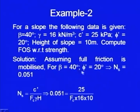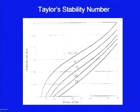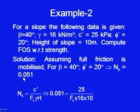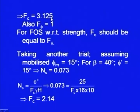For β = 40° and φ' = 20°, referring back to the same chart, from here it is 40 and 20, so somewhere here you get these values. N_s comes out to be around 0.051. So N_s = 0.051 and on the right-hand side you have c' = 25, F_c, and γ × H. Here φ' = 20 means it is fully mobilized. From here F_c comes out to be 3.125, and we had assumed full mobilization of φ'. So F_φ = tan(φ') / tan(φ_m'), and here φ_m and φ' are equal, so F_φ = 1.